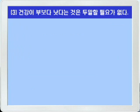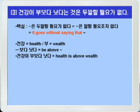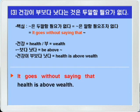다음 3번: 건강이 부보다 낫다는 것은 두 말 할 필요가 없다. 읽기만 해도 핵심이 떠오르시죠? '뭐뭐는 말할 필요조차 없다' — 'it goes without saying that'을 쓰면 되겠습니다. 건강은 health, 부·재산은 wealth를 쓰면 되죠. '뭐뭐보다 낫다' 할 때는 'be above'를 한번 써보겠습니다. 그래서 '건강이 부보다 낫다'는 'health is above wealth' 이렇게 쓰면 되겠습니다. 정답: 'It goes without saying that health is above wealth.'